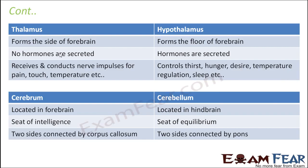Next is thalamus and hypothalamus. Both are parts of the forebrain. Thalamus forms the side of the forebrain and hypothalamus forms the floor of the forebrain. Hypothalamus basically denotes the end of the forebrain, after which the midbrain starts.